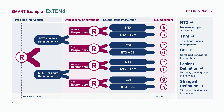Participants were assessed weekly on the tailoring variable, and as soon as they trigger non-response — whichever definition they're in — they're re-randomized to either switching to a combined behavioral intervention (CBI) that addresses adherence and psychological barriers, or continuing with naltrexone and adding the CBI. So there are two strategies for non-responders: switching to the behavioral intervention or augmenting naltrexone with the behavioral intervention.